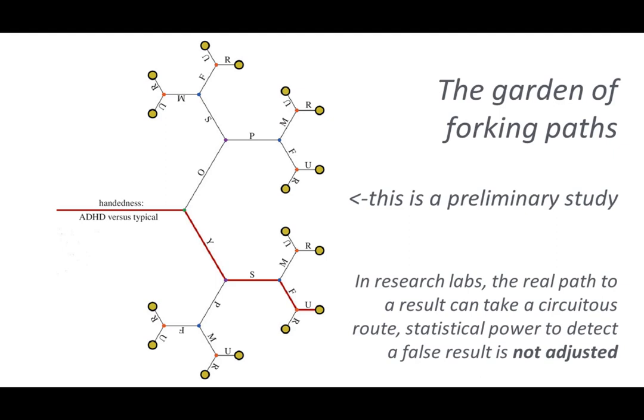This is actually not a problem — it's how all studies happen. You see something and follow it up with different experiments and different subjects. However, statistical power to detect a false result is typically adjusted only at the final study. It is not adjusted for all of the forking paths that happened beforehand. A lot of preliminary studies set up their statistical tests only for the final portion, not for all the earlier studies in that same line of reasoning.